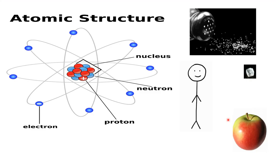Now if you were to take all the people on the planet and do this same thing — take out all the space from all the atoms of all the people on the planet — all of the protons, neutrons, and electrons that make up every person on the planet could easily fit inside the volume of an apple. This gives you the idea of how small these subatomic particles are.